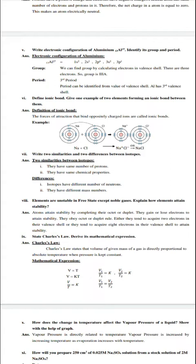Question 7: Write two similarities and two differences between isotopes. Similarities: they have same number of protons, they have same chemical properties. Differences: they have different mass numbers and they have different number of neutrons.